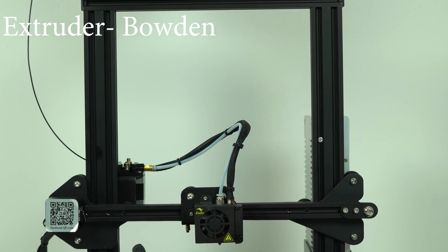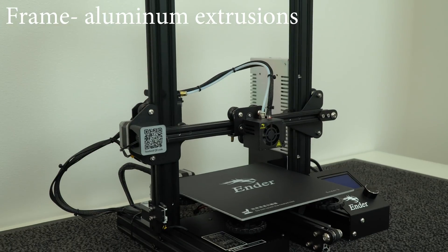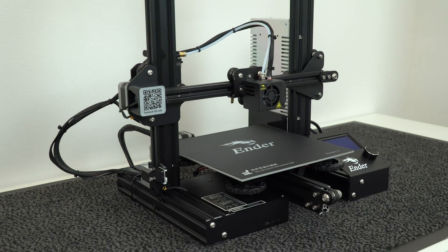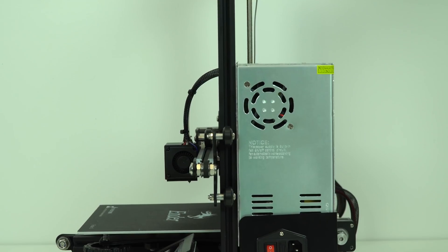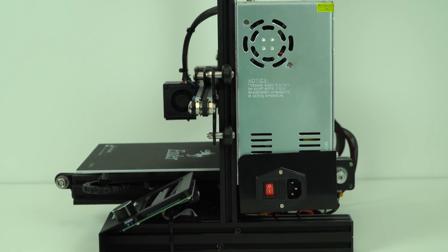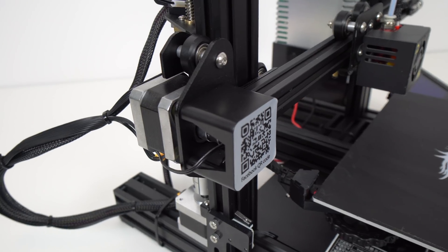The machine has a Bowden-style extruder, frame is made of aluminum extrusion and none of the 3D printed parts. Now we have just injection molded parts like power supply cover, end caps and this X-stop microswitch cover on the front.